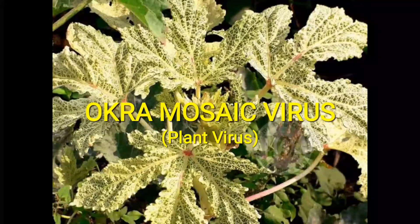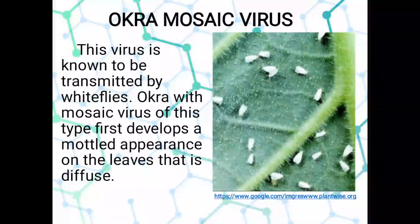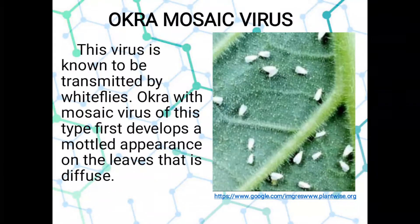The Okra Mosaic Virus — a plant virus — is known to be transmitted by whiteflies. Okra with mosaic virus first develops a mottled appearance on the leaves. Based on our image on the right, it shows the whiteflies inhabiting the plant leaves. I remember when we used to plant okra in our backyard for food consumption — I noticed some white organisms leaving the leaves. So, if you see those kinds of organisms, remove them to save your plant.